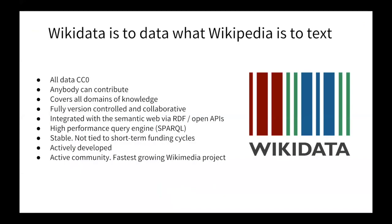In a nutshell, Wikidata is to data what Wikipedia is to text. All the data is CC0. Anyone, any machine can contribute to it. It aspires to cover all domains of knowledge. It's fully version-controlled and collaborative. It has tight integration with the semantic web via RDF dumps and open APIs. It has a high-performance query engine in SPARQL. It is stable in the sense that it's not tied to any short-term funding cycle — it's there for the long term. It's being actively developed by the Wikimedia chapter and has a very active community.